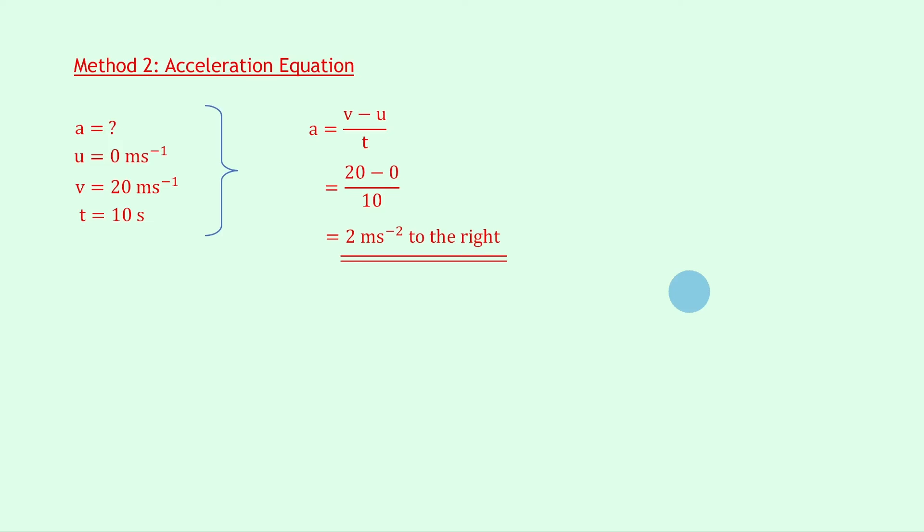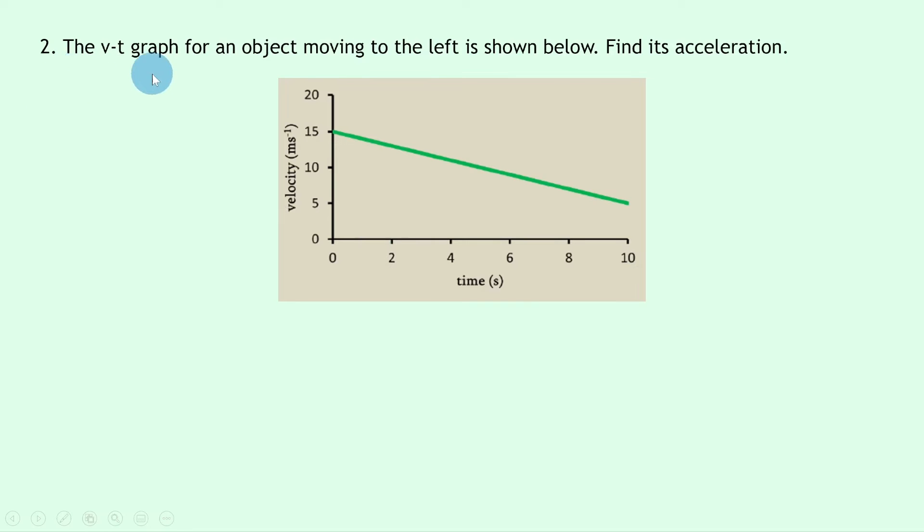Question 2 says the velocity-time graph for an object moving to the left is shown below. Find its acceleration. So this time we've got a uniform deceleration and the object's not coming to rest. This time I'm just going to choose one of the methods, so I'm going to use the acceleration equation.